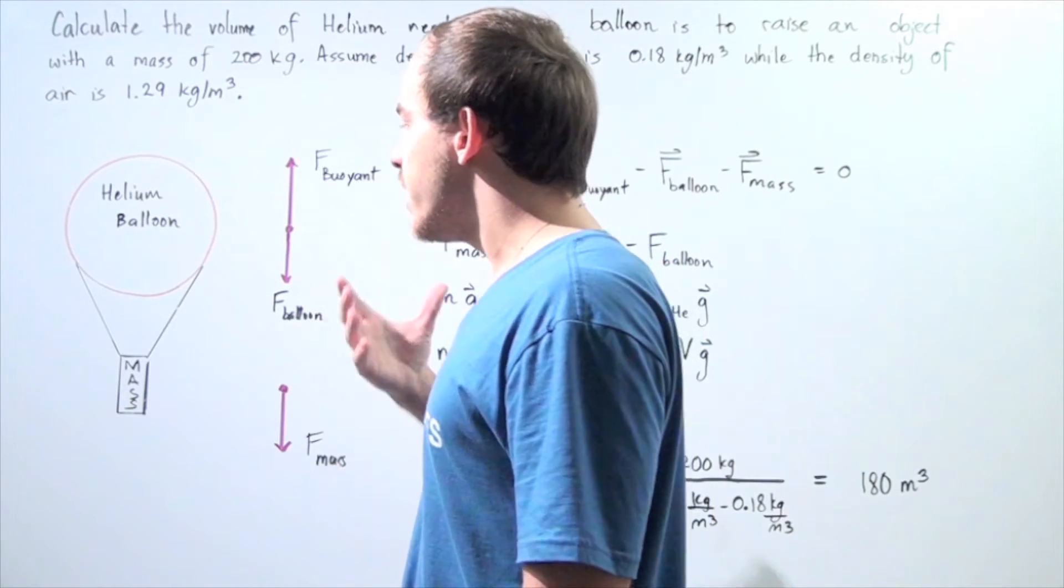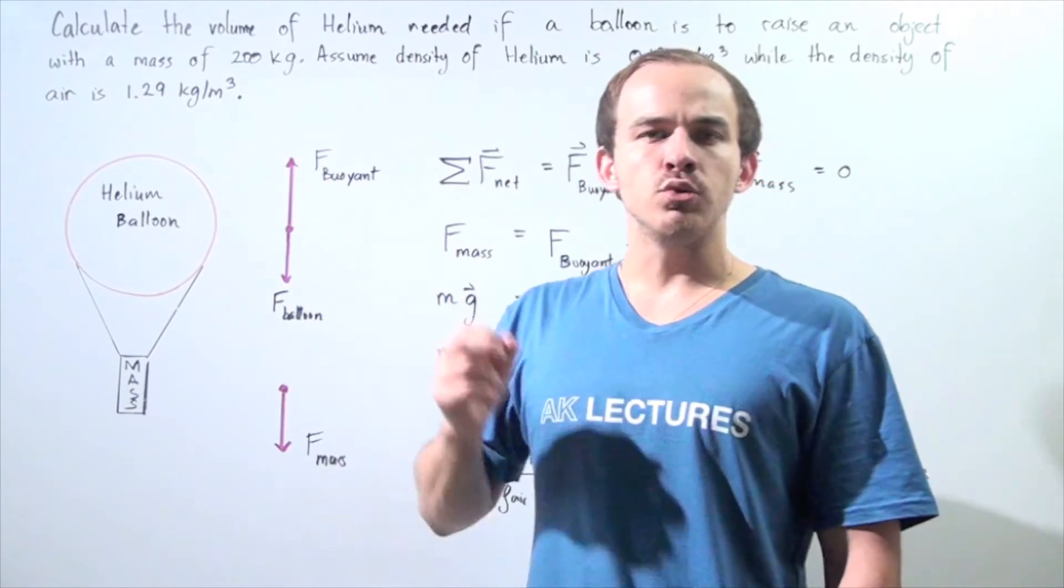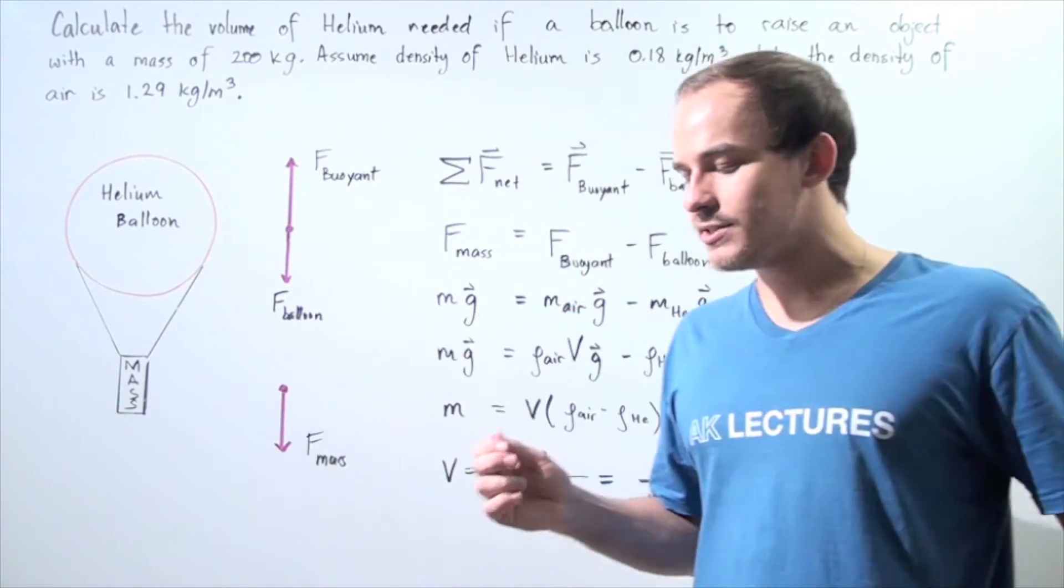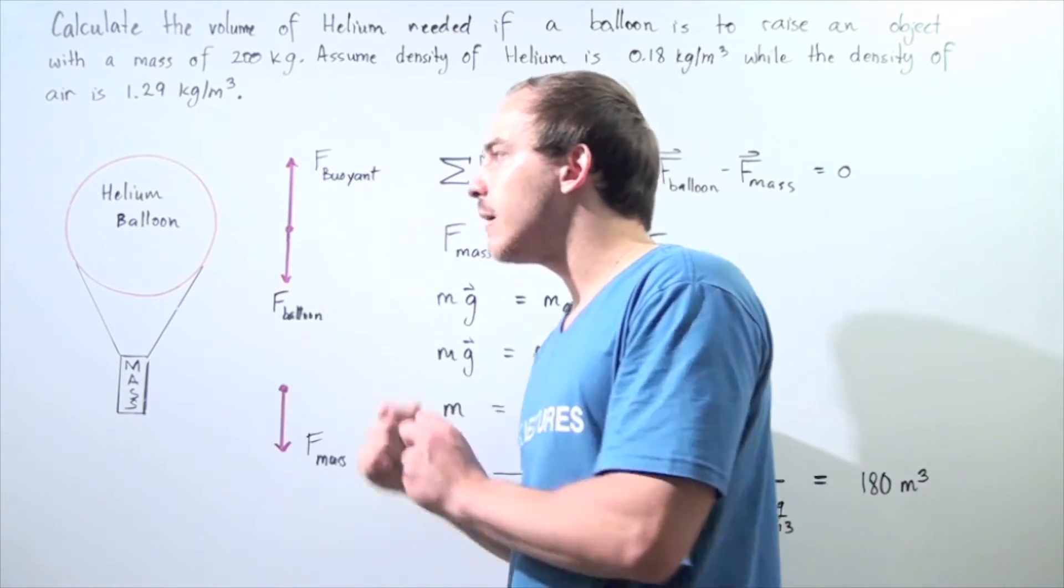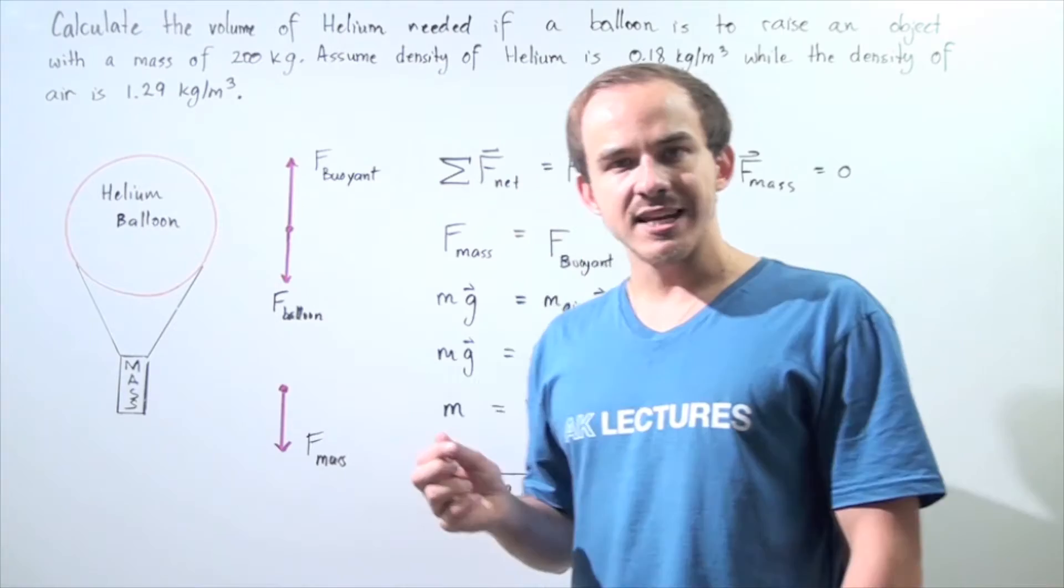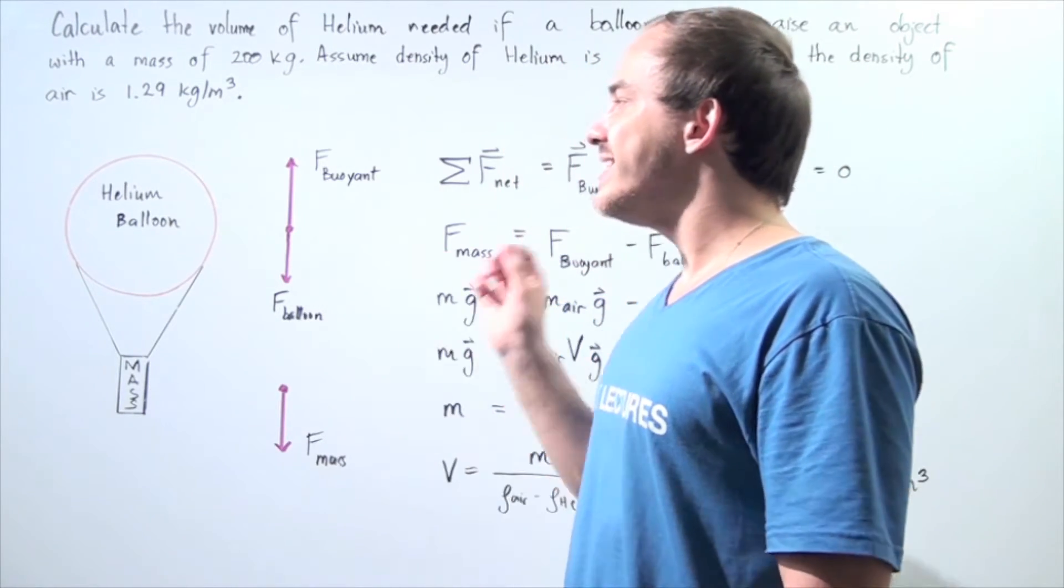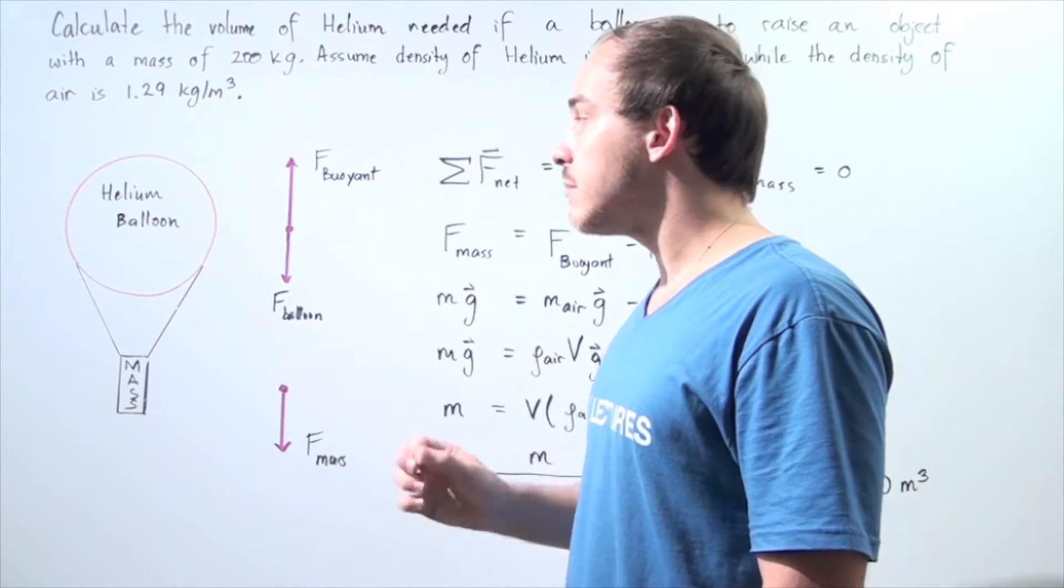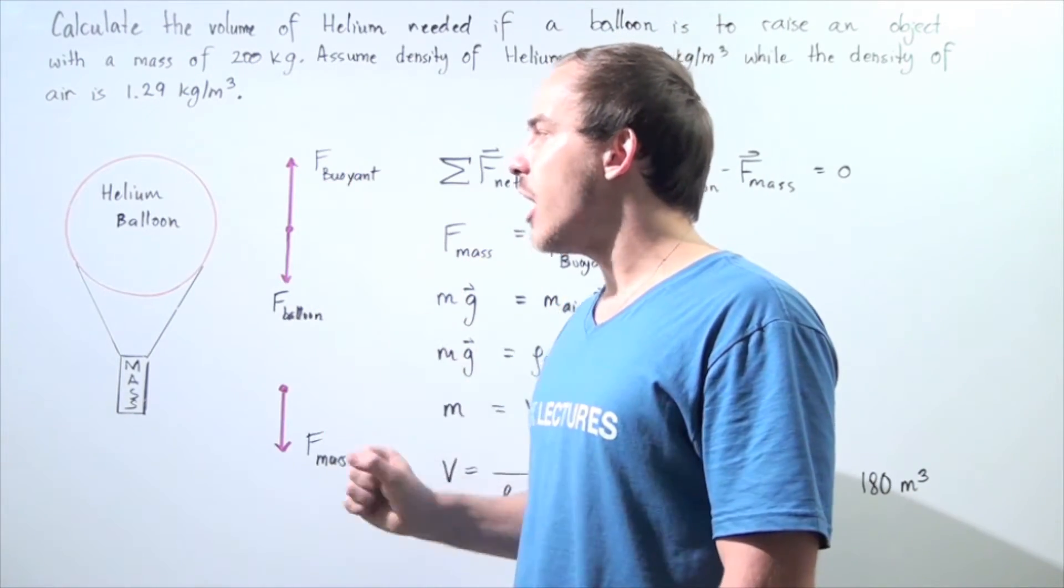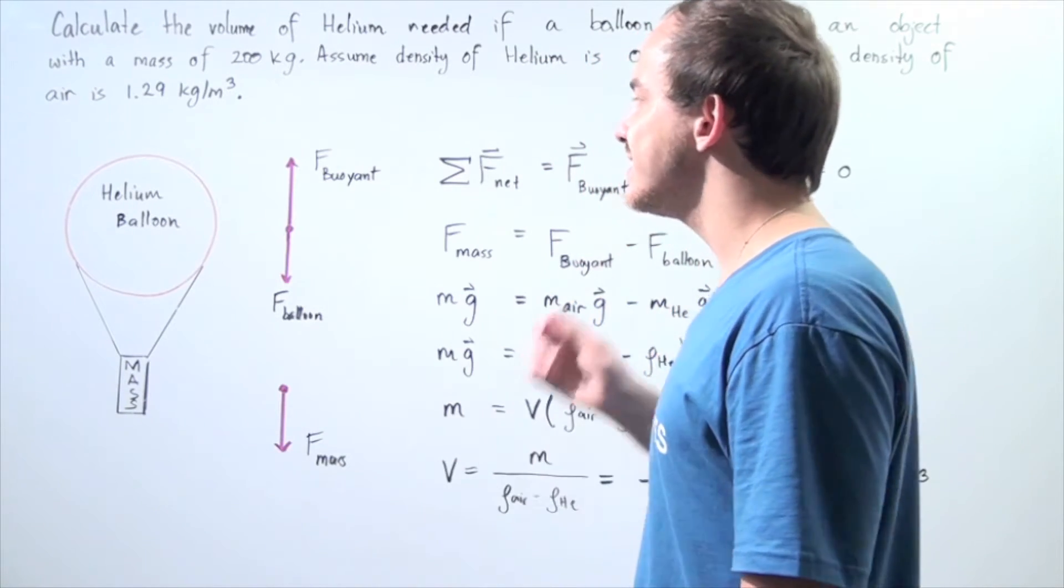We also assume that our system of objects is in dynamic equilibrium. That basically means that even though the two objects are traveling upward with a certain velocity, they're not accelerating, and that means that the sum of all the forces acting on the object along any axis is zero.